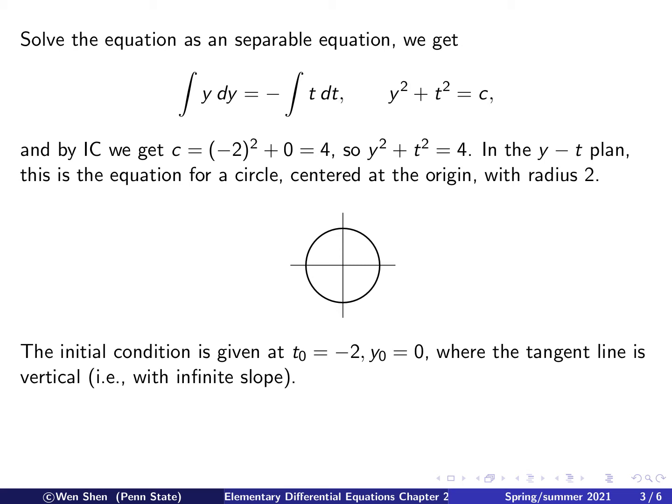Where is the initial condition for the problem? The initial condition is given at t is negative 2, y is 0, so it is at this point. Looking at the circle at this point, we see that the tangent line here is vertical, that means the derivative is infinite.